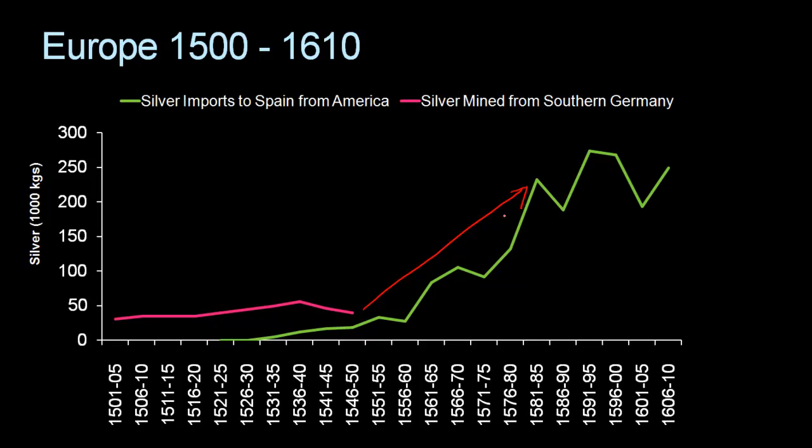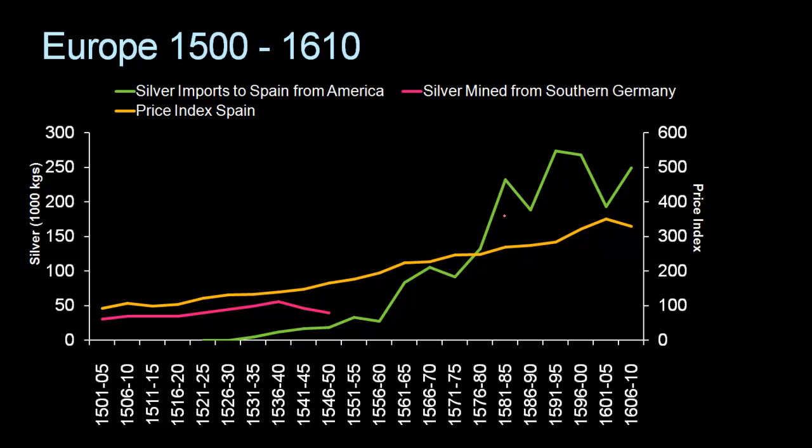The point is, it doesn't seem like much of the money they imported actually went to developing productive enterprises in Spain. So it's not particularly surprising that if you look at the price index in Spain across this time, which I'm just going to add to this graph, it's the yellow line you see over here. You can see the price index increasing about three-fold from about 100 over here to about 300 by the end of the century.